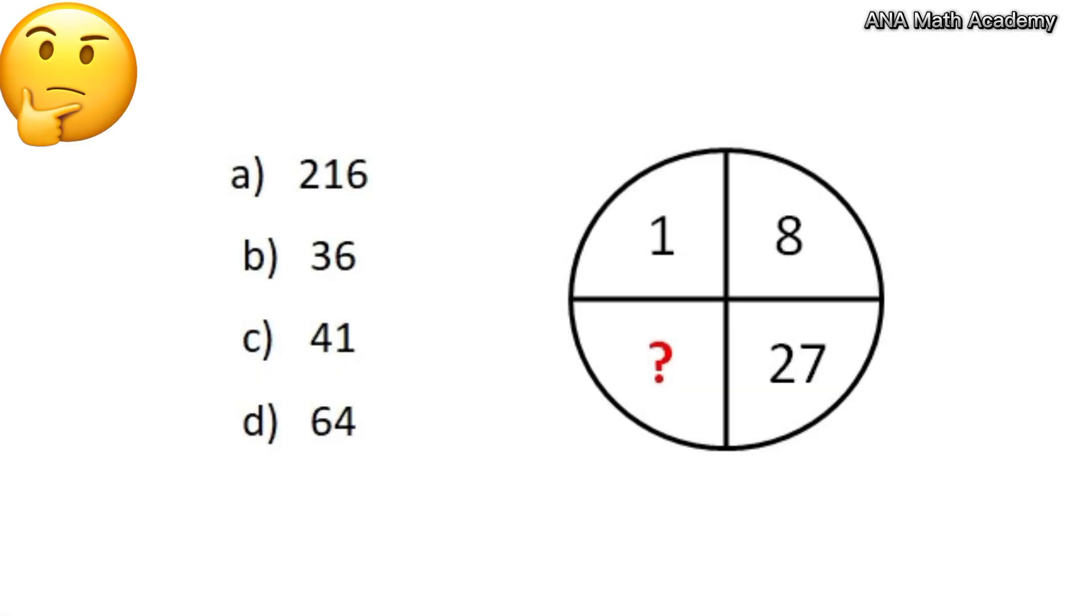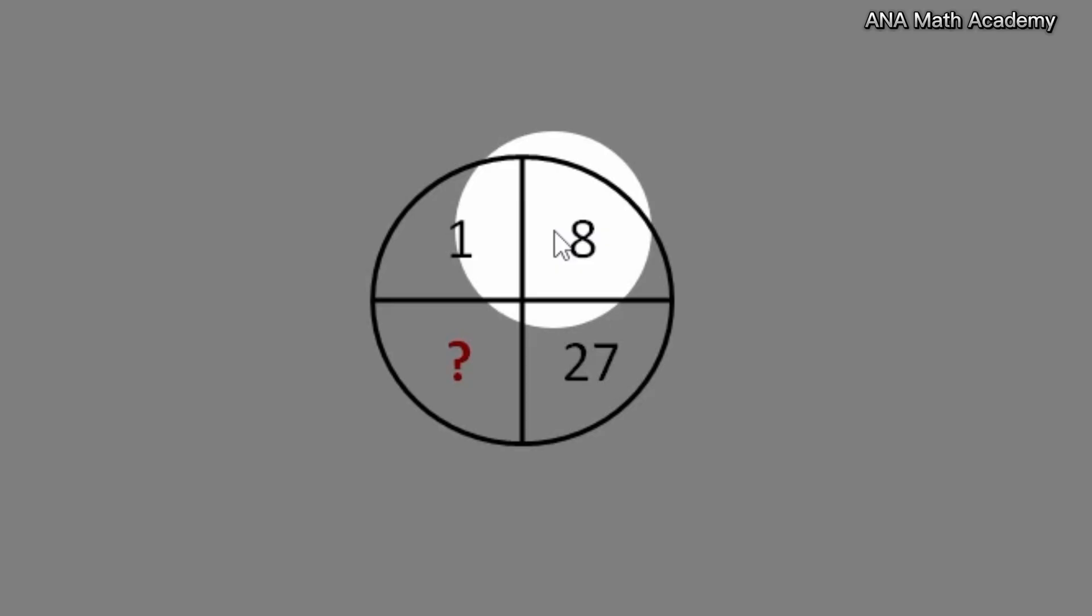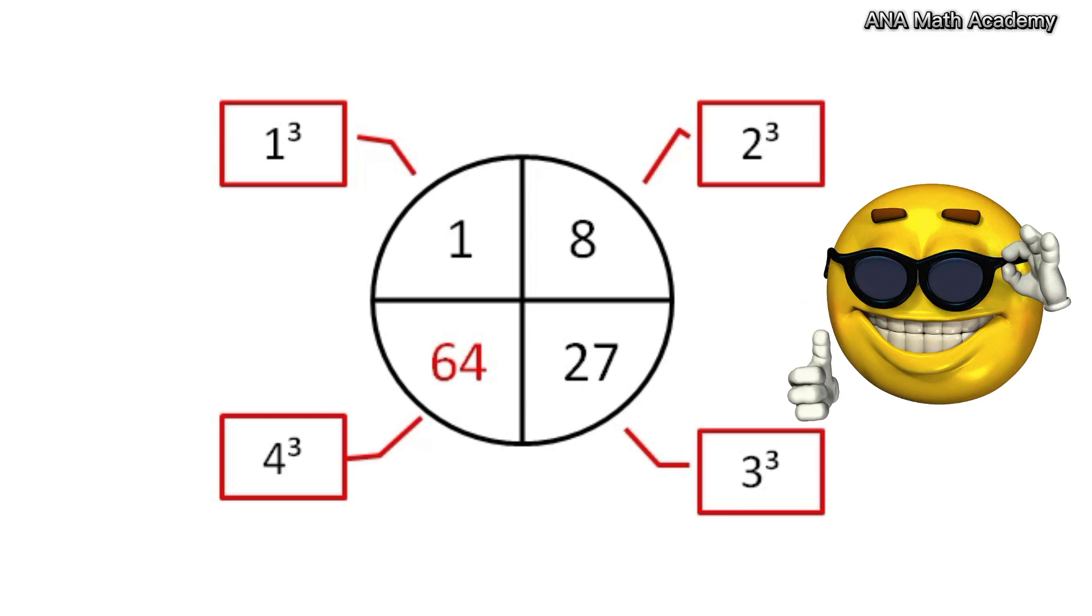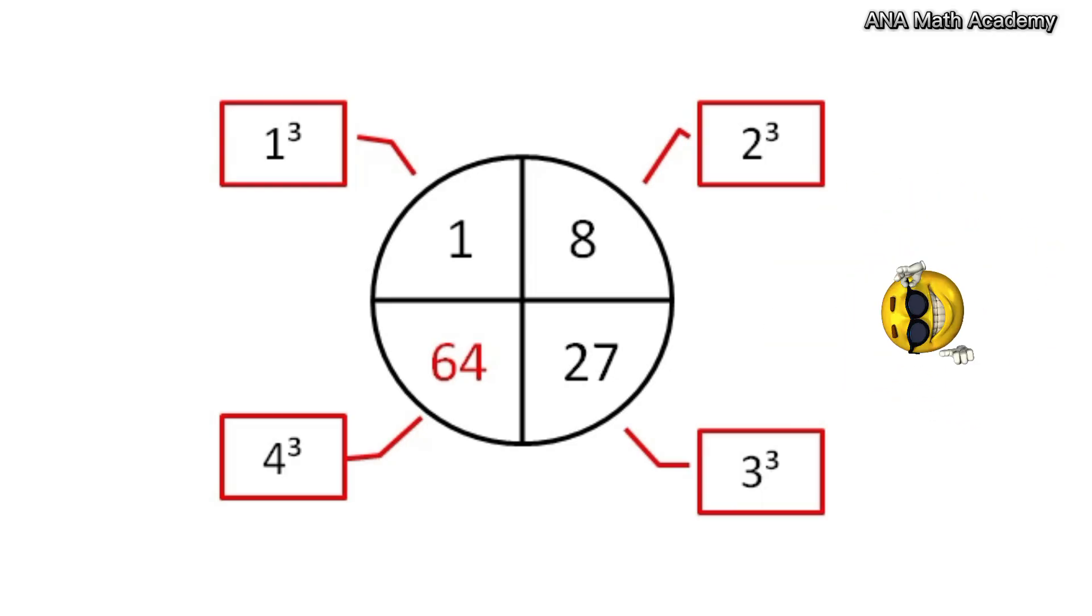Now let's move on to the second question. Your time starts now. Time's up, did you get the answer? If not, don't worry, let's see the solution. You will notice these are cubes of 1, 2, 3. So our answer is 64. That was an easy one, right guys?